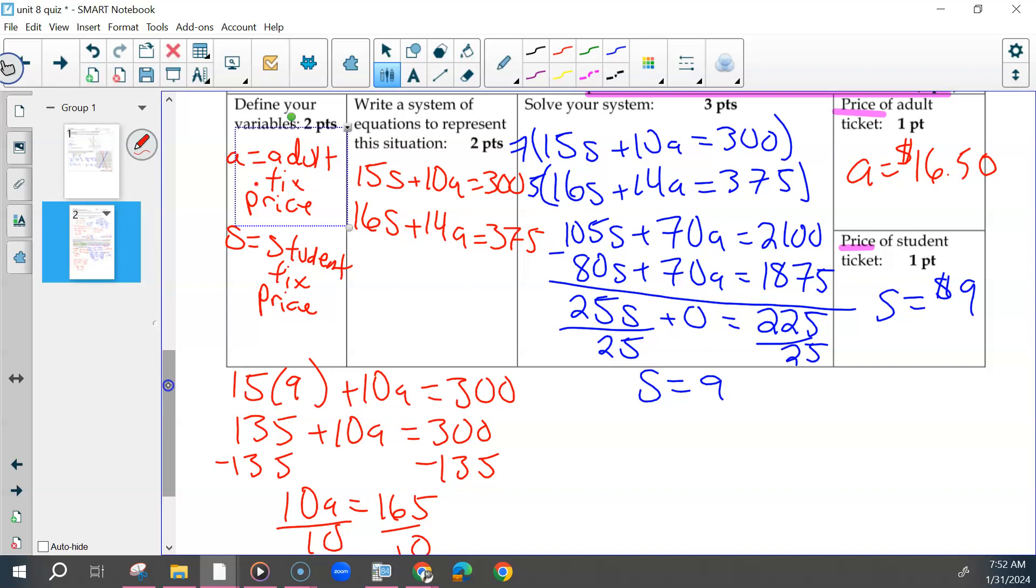So then eight points total on this one: two points for defining your variables, two points for your equations. The three points for the solving were however you set up the solving—elimination or substitution didn't matter—solving for one of the variables, solving for the other variable, and then your two answers. Questions on any of the word solving?